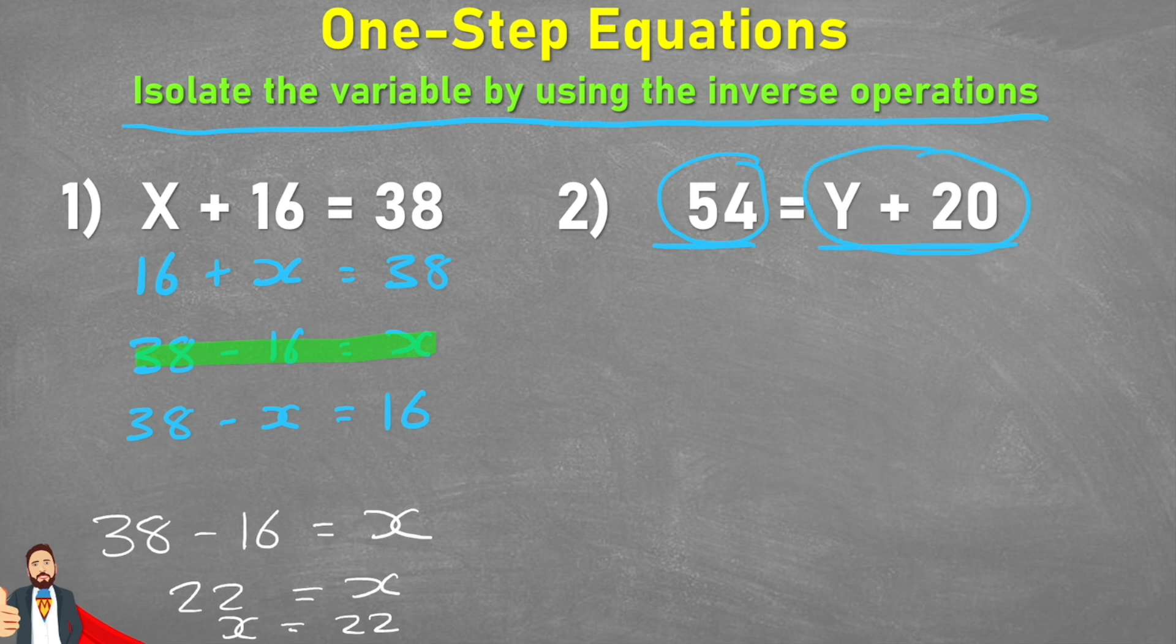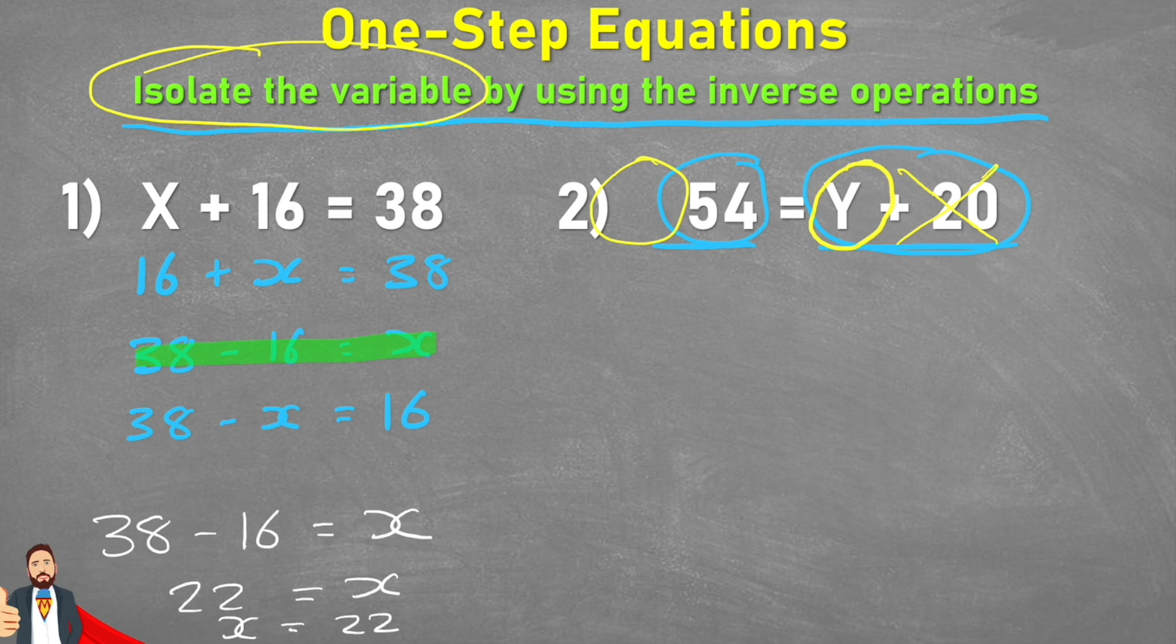So remember, what I'm trying to do is isolate the variable. I'm trying to get this y on its own. And the only way to get this y on its own is by getting rid of this plus 20. But if I get rid of the plus 20 on this side, I must get rid of a plus 20 on the other side.